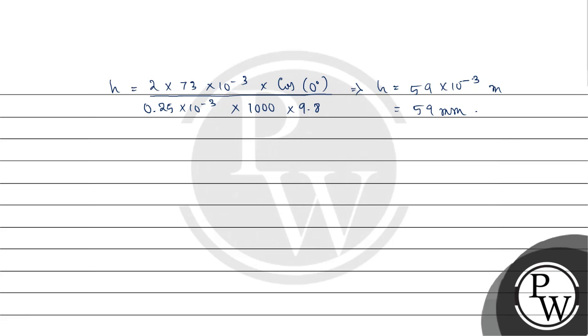So here we see that h is greater than L. This means the water can rise higher than the actual length of the vertical capillary tube above the water surface. So this means that a meniscus will form at the top of the capillary tube.